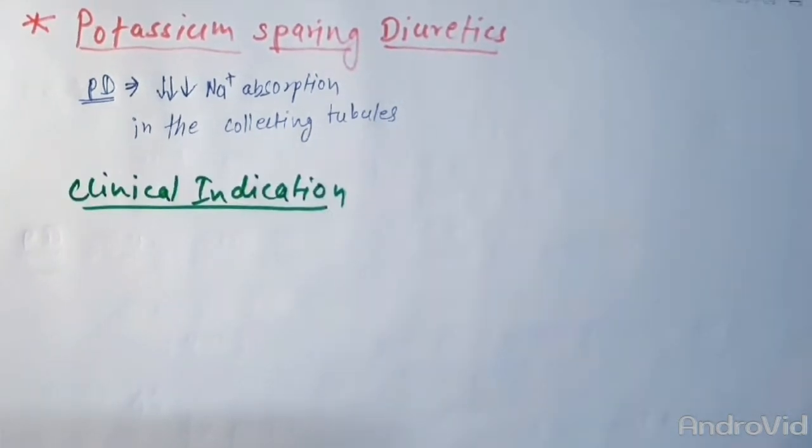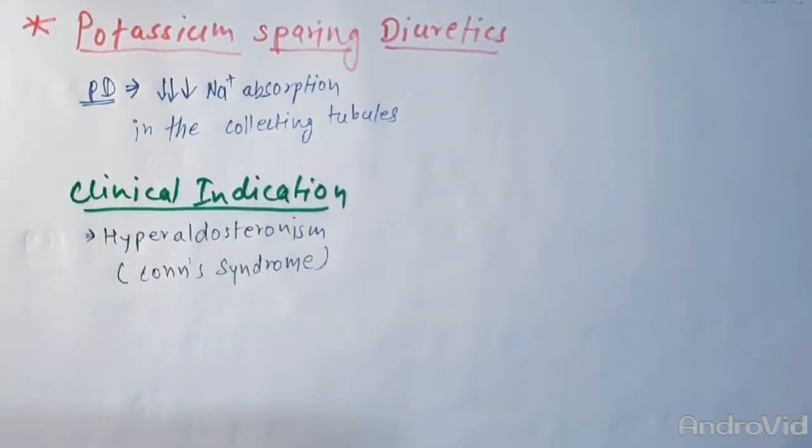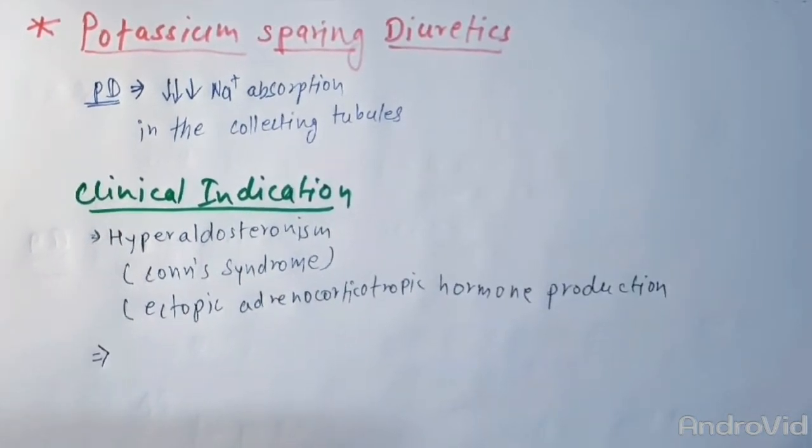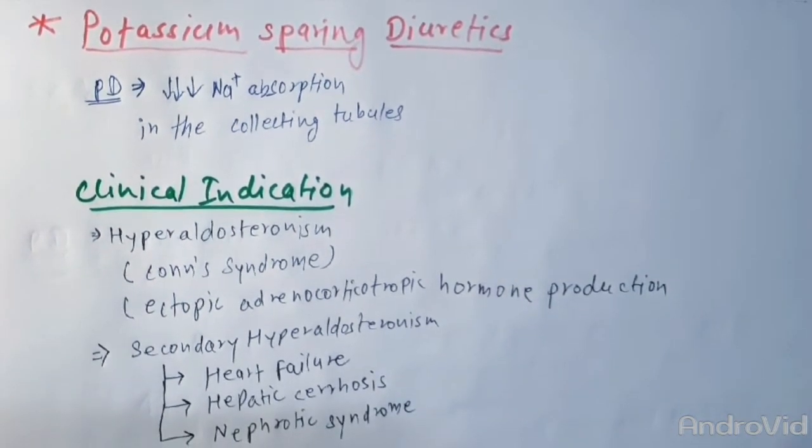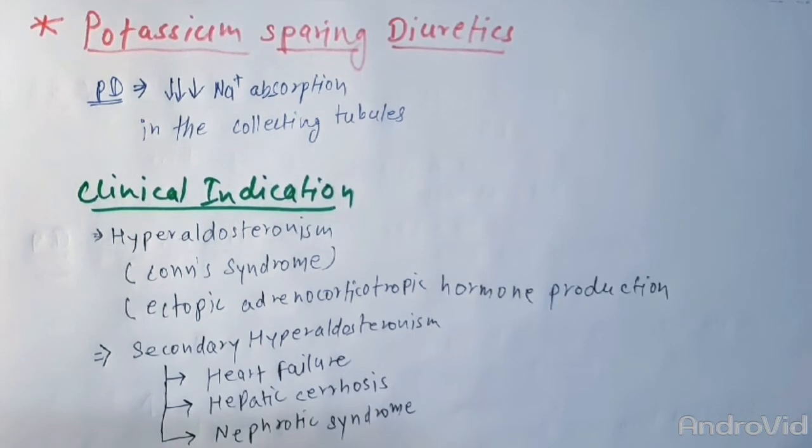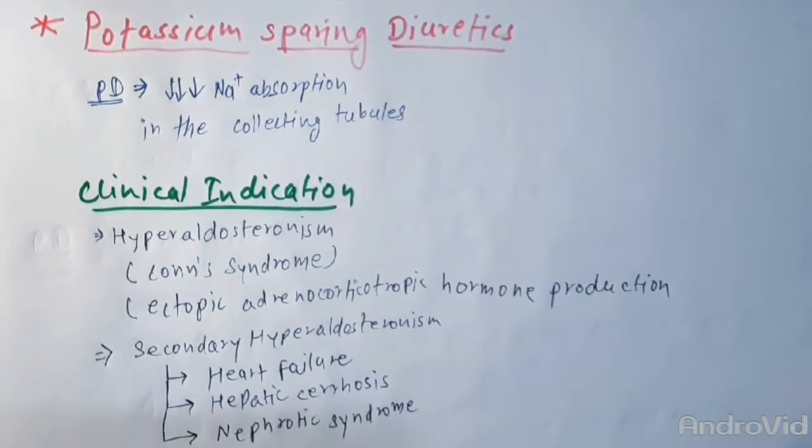Let's discuss about their uses. They are most useful in states of mineralocorticoid excess, that is hyperaldosteronism, in Conn's syndrome, and also in ectopic adrenocorticotropic hormone production, or can also be used in secondary hyperaldosteronism evoked by heart failure, hepatic cirrhosis, and nephrotic syndrome. A very rare syndrome, Liddle's syndrome, which is an autosomal dominant disorder that results in activation of sodium channels in the cortical collecting ducts causing increased sodium reabsorption and potassium secretion by the kidneys.